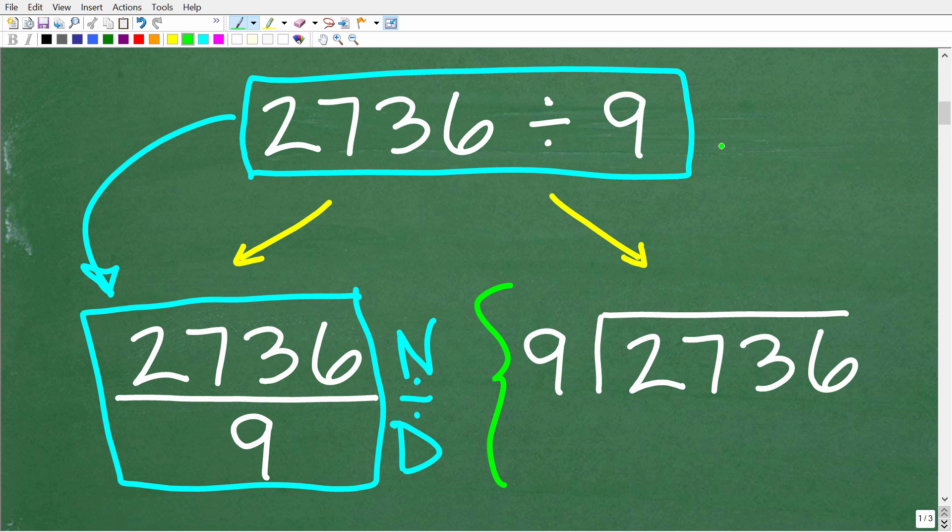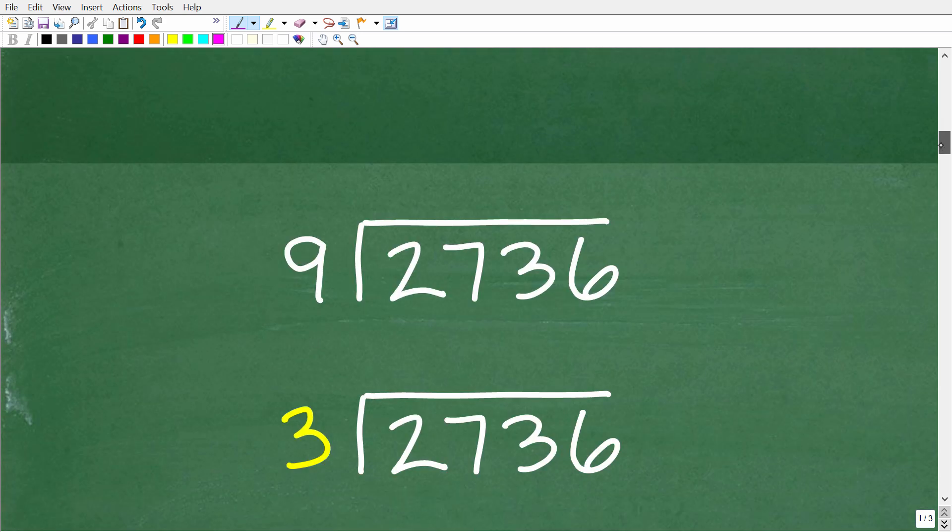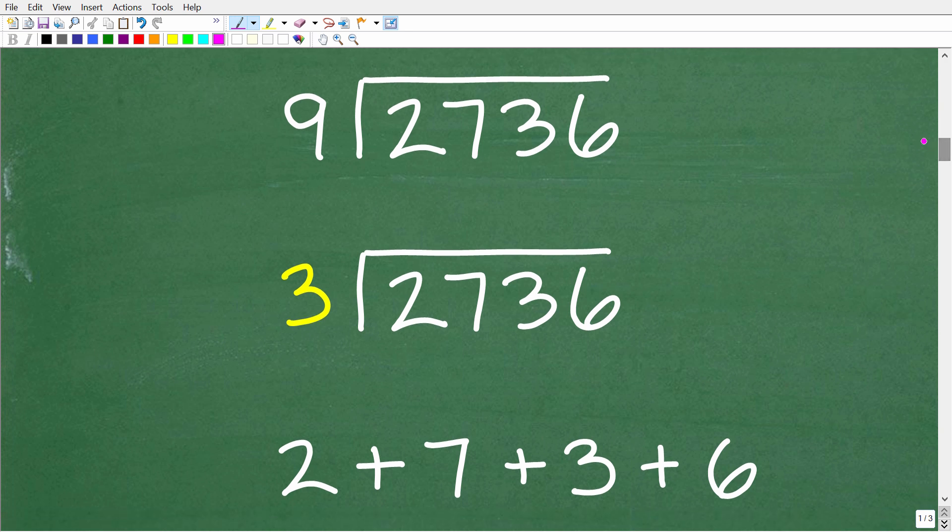So the second question that comes to mind here is, is 2736 divisible by 9? In other words, are we going to get a remainder or not? Some of you might be thinking, well, the only way to know that answer is to do the problem and see if we have anything left over. But actually, there is another way, and that is we can use something called a divisibility rule.